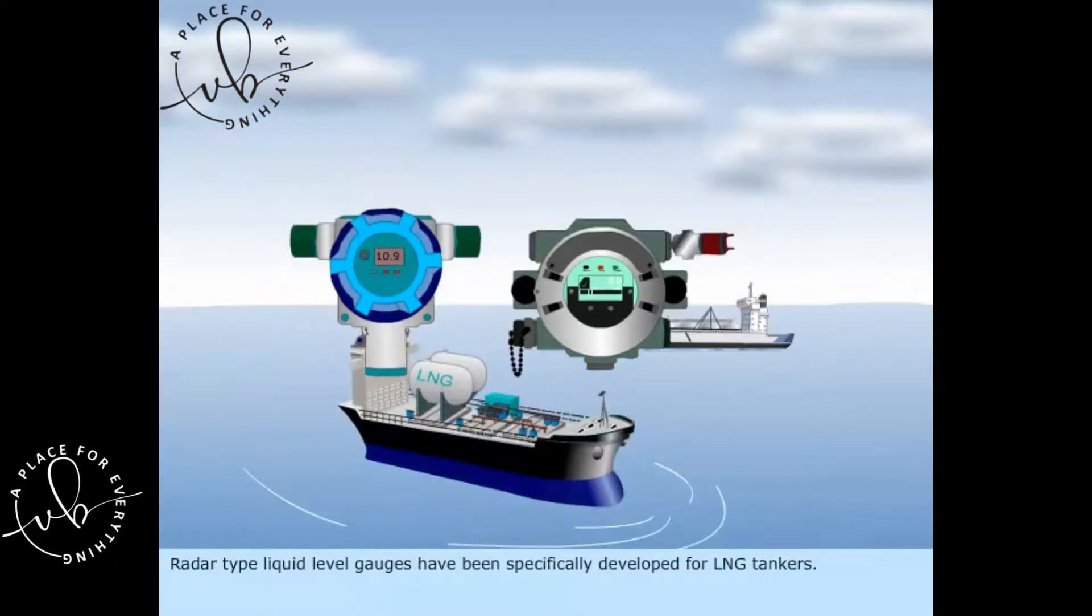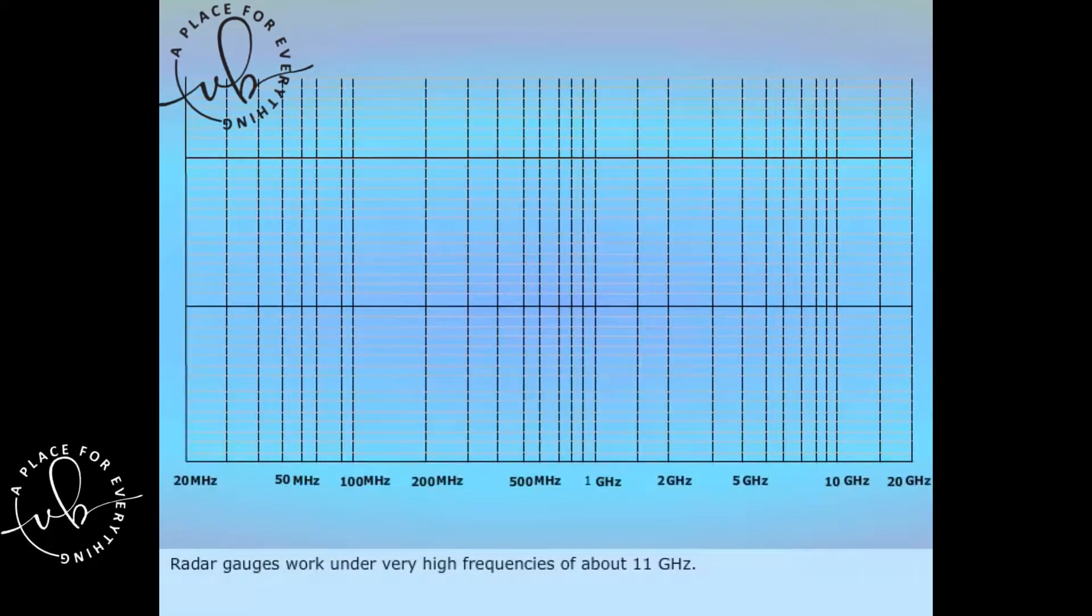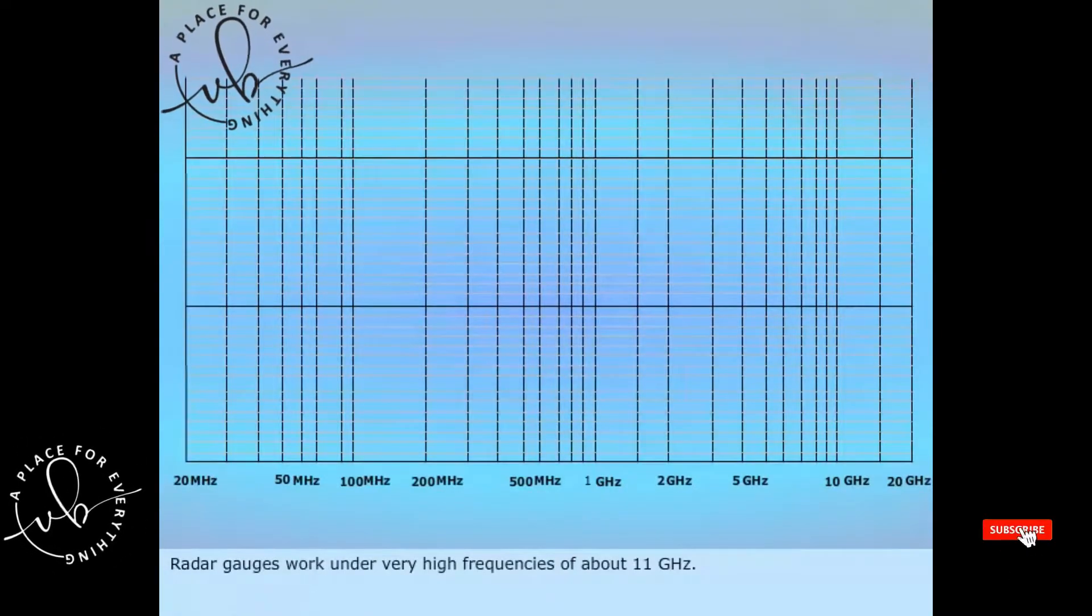Radar type liquid level gauges have been specifically developed for LNG tankers. Radar gauges work under very high frequencies of about 11 GHz.